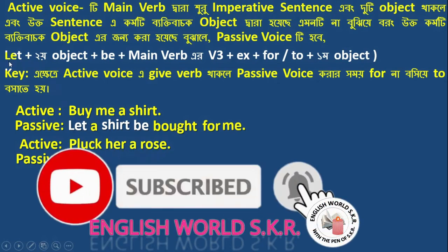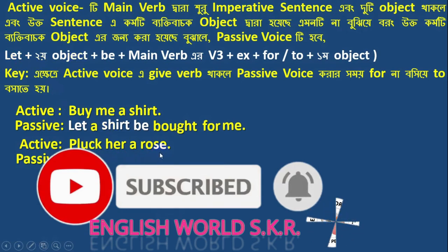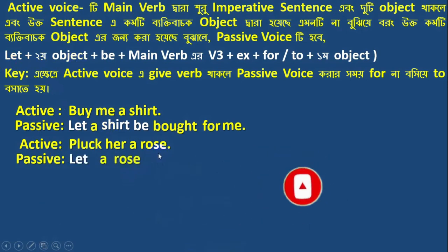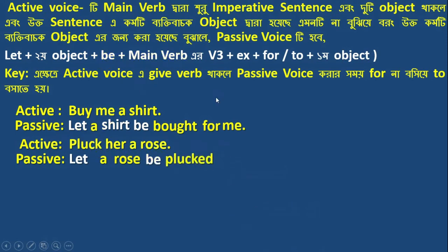Let's form the object. The object is 'to be'. The main verb is 'to be' — plucked. Extension: 'for'. Then the second object follows. So the passive structure builds: object + is to be + past participle + for + object.